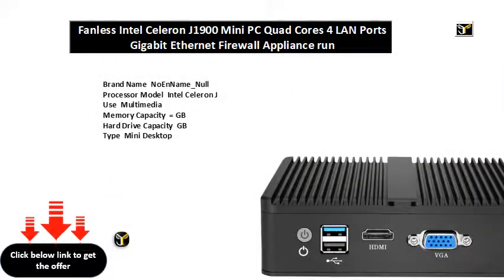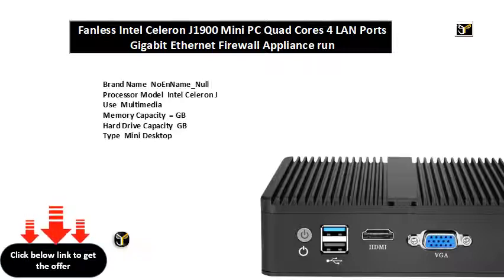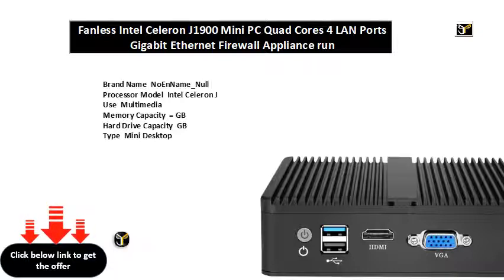Brand name: noename_null. Processor model: Intel Celeron J. Use: multimedia. Memory capacity: GB. Hard drive capacity: GB. Model number: XA. Processor main frequency: GHz. Processor brand: Intel. Graphics card type: integrated. Type: mini PC. Memory type: SODIMM DDR3L. Hard drive type: mSATA SSD. Supported OS: Windows, Windows Server, pfSense, Linux, and more.